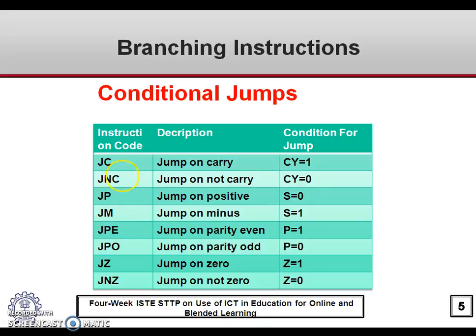JPE means jump on parity even, and JPO means jump on parity odd — these check the parity flag. JZ means jump on zero — it checks the zero flag, and if it is 1, then only the program sequence is changed. JNZ means jump on non-zero.